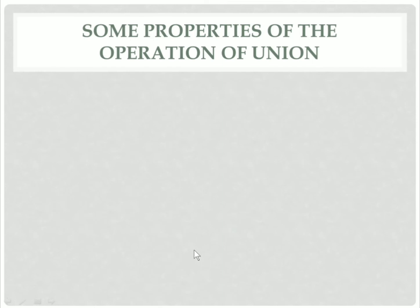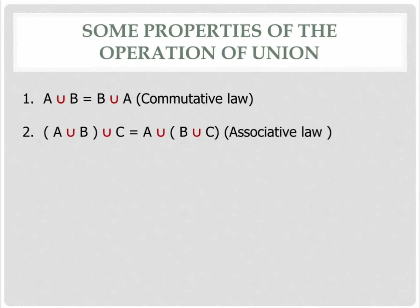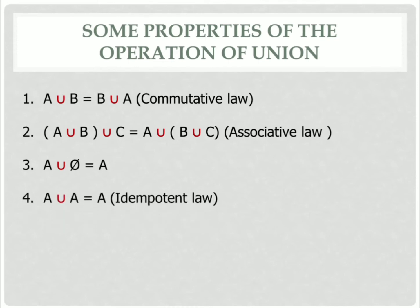Some properties of the union operation: First, A ∪ B = B ∪ A — this is called the commutative law. Second, (A ∪ B) ∪ C = A ∪ (B ∪ C) — this is called the associative law. Third, A ∪ ∅ = A, since the empty set has no elements. Fourth, A ∪ A = A — this is called the idempotent law. Fifth, U ∪ A = U — this is called the law of the universal set. These are the five properties which are generally used.